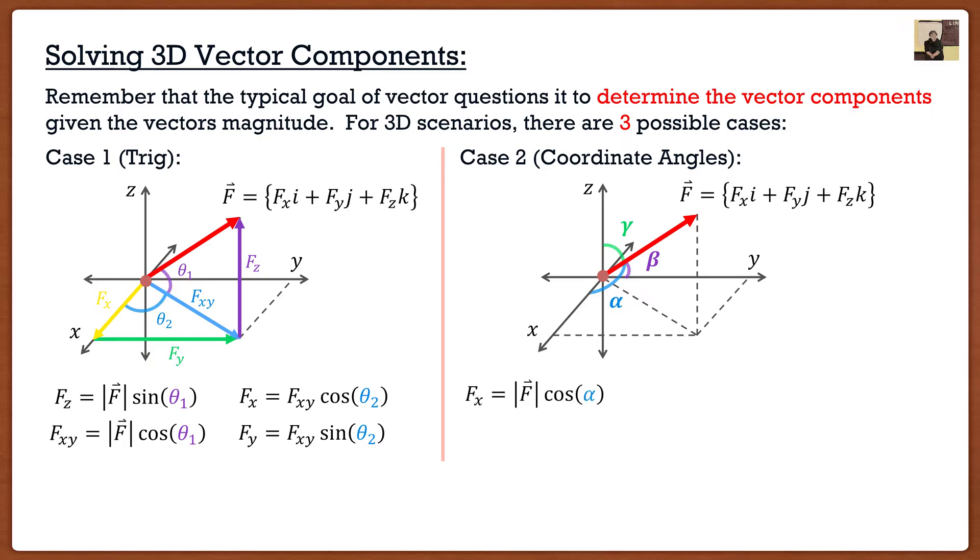We know that we can find those components if we know those coordinate direction angles. fx is simply the magnitude of f multiplied by cosine alpha, fy is the magnitude of f multiplied by cosine beta, and fz is the magnitude of f multiplied by cosine gamma. As we can see this is the easier of the cases. So these are the two main cases you're going to see initially.